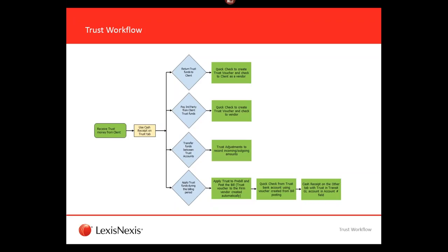My rule of thumb: only use a cash receipt for new money, and use trust adjustments for money that's already there. For example, if you put money on the wrong matter, do a negative trust adjustment on the matter where the money is sitting and a positive adjustment to the correct matter. If you need to move money from one bank to another bank, I'd recommend doing a cash receipt instead.